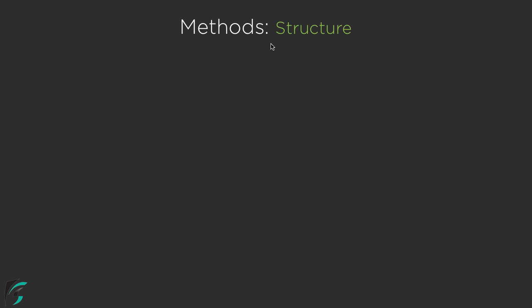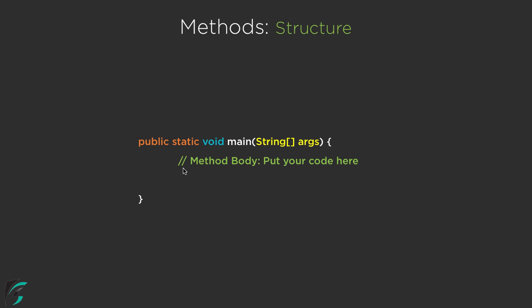So first of all, how does a method look like? That is, what is the basic structure of a method in Java? Now so far we have seen the public static void main method having the argument of string array, and inside this main method we use to write our code. Now whatever code that we write inside a method is actually known as the method body. So this is the basic structure of the method.